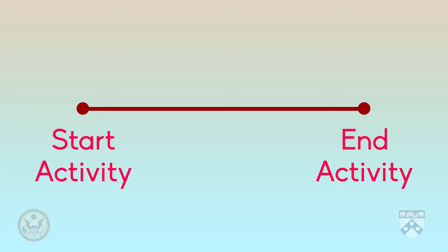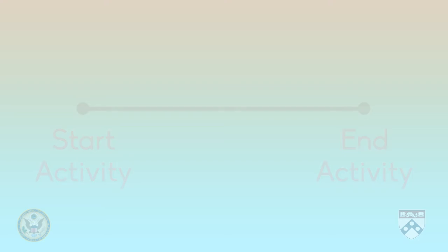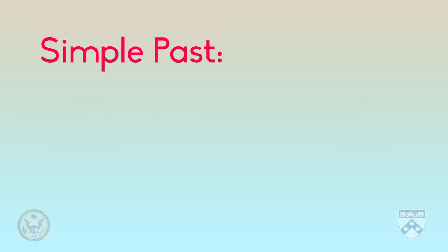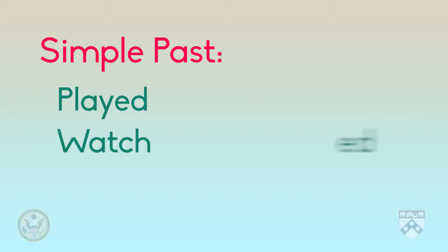Most verbs can be put in the past simply by adding -ed or just -d to the end of the verb. For example: played, watched, completed.